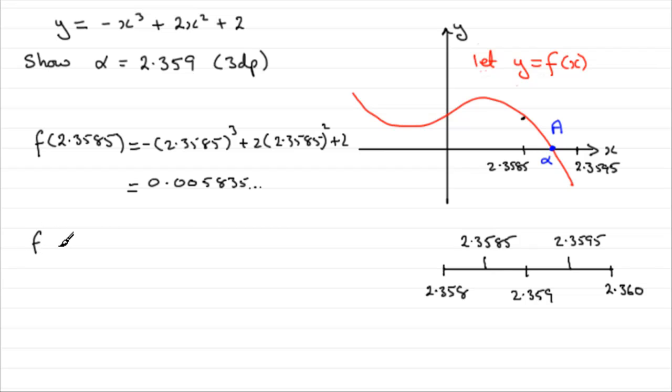So, we'll just do the upper bound, f of 2.3595, and if we do exactly the same, substitute this into the equation, minus 2.3595 all cubed, then plus 2 times 2.3595 squared, plus 2. What do we get if we do that on the calculator?